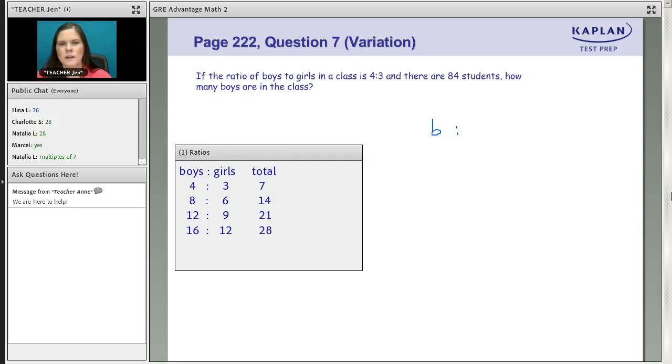Boys to girls, that's a four to three relationship, according to the question, and the total, the smallest possible total, T for total here on the right, would be seven. But according to the question there, we don't have seven kids. We have 84 students. I'm going to pencil that in down below the total seven there. By what value would you multiply the seven original total to get down to the 84 real total?